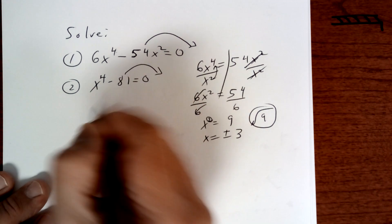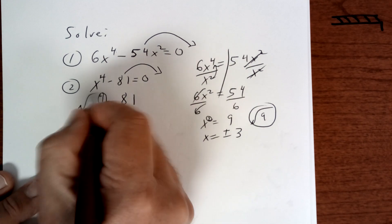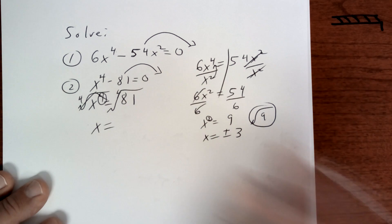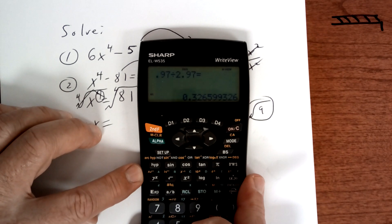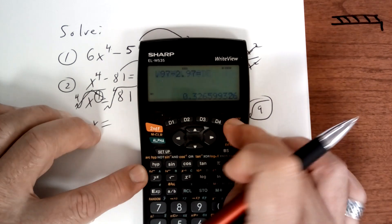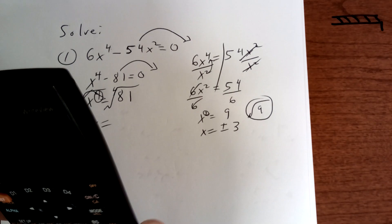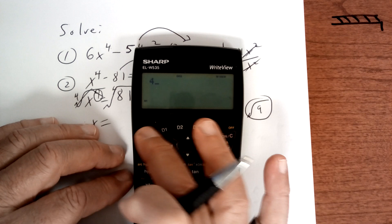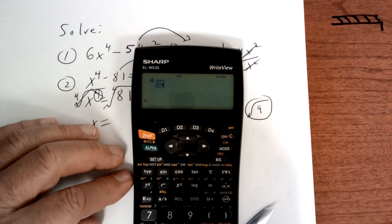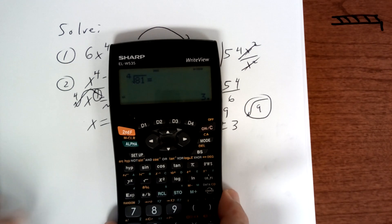On this one right here, you're going to move this to the other side, and then you're going to take the 4th root of 81. So you get your calculator and you do that. Press 2nd and then that — let's try 4 and then 2nd and then that. The 4th root of 81 should be 3. And that's how you do that. Figure it out on your calculator; if you need some help, I can try.